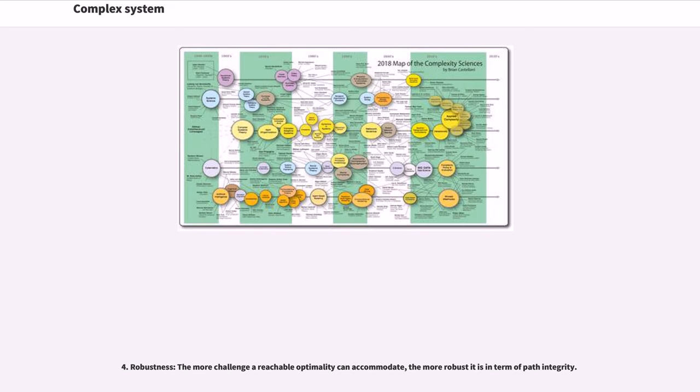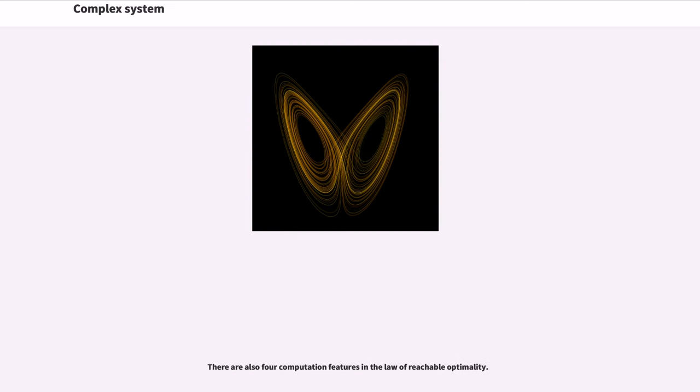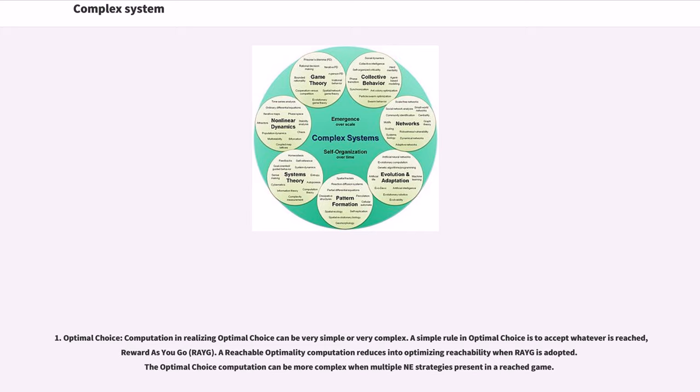4. Robustness: the more challenge a reachable optimality can accommodate, the more robust it is in terms of path integrity. There are also four computation features in the law of reachable optimality. 1. Optimal choice: computation and realizing optimal choice can be very simple or very complex. A simple rule in optimal choice is to accept whatever is reached, reward as you go, R-A-Y-G.